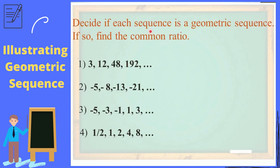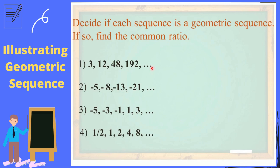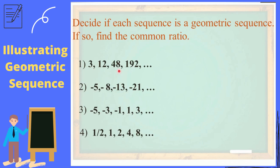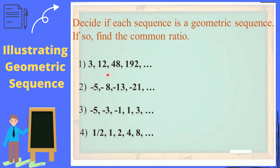Decide if each sequence is a geometric sequence. If so, find the common ratio. In order to identify if the following sequence is a geometric sequence, we need to find the common ratio first — divide A sub 2 by A sub 1, or A sub 3 by A sub 2, or A sub 4 by A sub 3. So 12 divided by 3 is 4. 48 divided by 12 is 4 also. 192 divided by 48 is 4. So therefore, it is a geometric sequence and the common ratio is 4.